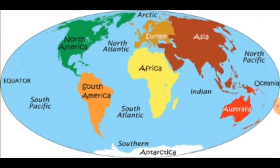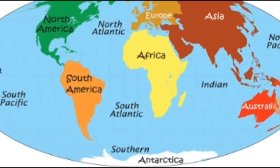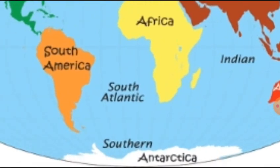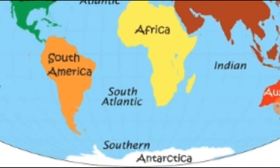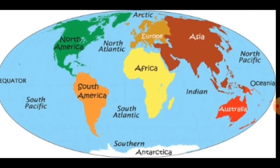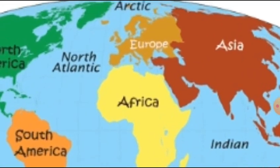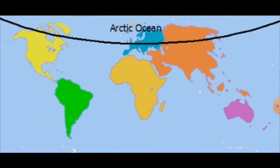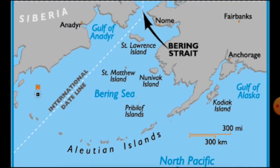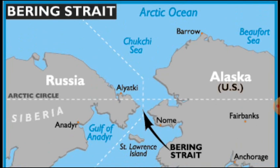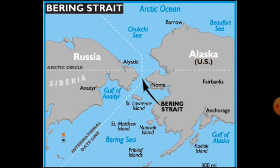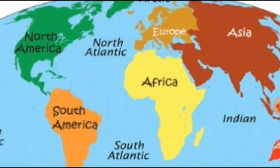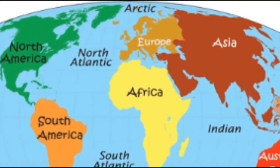The Southern Ocean encircles the continent of Antarctica and extends northward to 60 degrees south latitude. The Arctic Ocean is located within the Arctic Circle and surrounds the North Pole. It is connected with the Pacific Ocean by a narrow stretch of shallow water known as Bering Strait, and is bound by the northern coast of North America and Eurasia — that is Europe plus Asia.